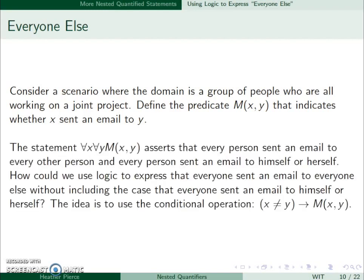So the statement ∀x∀y M(x,y) tells us that every person sent an email to every other person, and every other person sent an email to themselves. So what if we don't want to say that? We just want to say that they sent an email to everyone else. They did not include themselves.